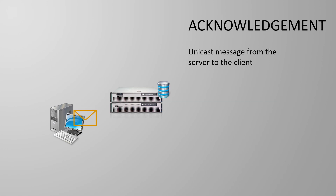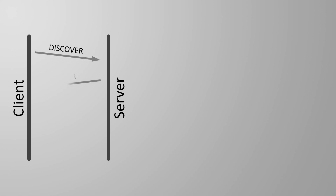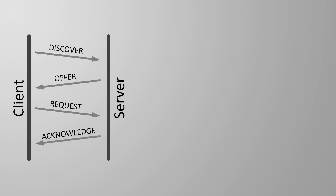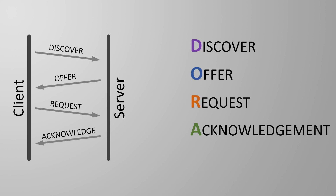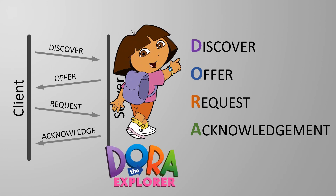The client is now free to use the IP and any other information that the server may have given it. Requesting an IP from a DHCP server is a four-message process. If you want an interesting way to remember this process, just think of Dora the Explorer — Discover, Offer, Request, Acknowledge.